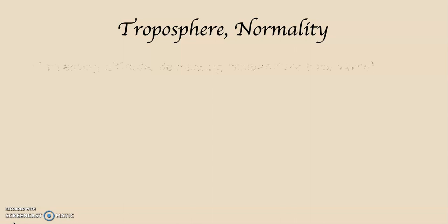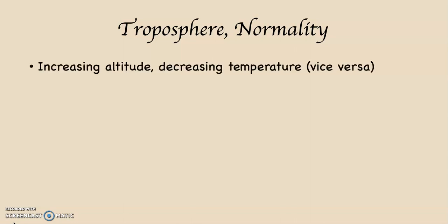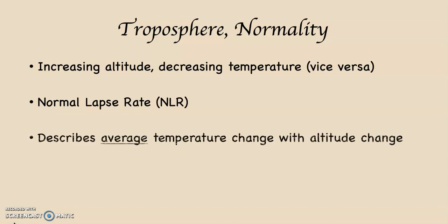Under normal conditions in the troposphere, increasing altitude results in decreasing temperature and vice versa — decreasing altitude results in increasing air temperature. This happens at what's known as the normal lapse rate, or NLR. The NLR describes the average temperature change with increasing or decreasing altitude in the troposphere. That average change is 3.5 degrees Fahrenheit per 1,000 feet.